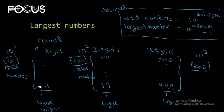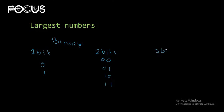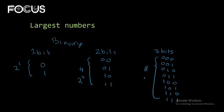Now let's see what happens in binary. If we have one bit, we can write 0 and 1 — there are 2 total numbers, which is 2 to the power of 1. With two bits, we can write 00, 01, 10, and 11 — the total numbers are 4, which is 2 to the power of 2. With three bits, the total numbers are 8, which is 2 to the power of 3.